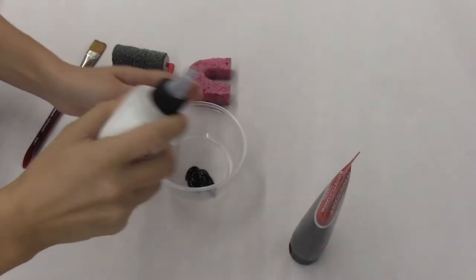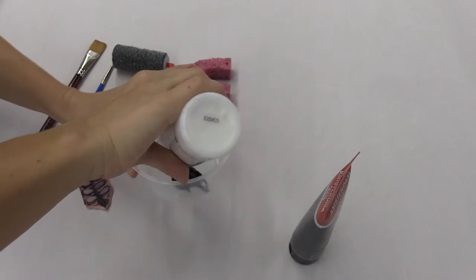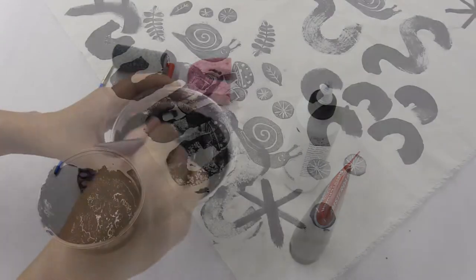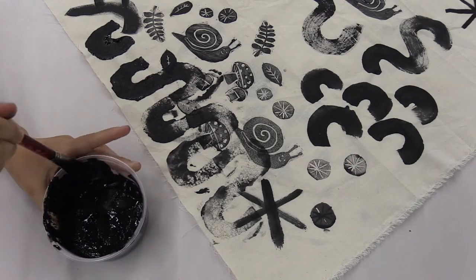Again, you can use any color of acrylic paint. Stir it together using a brush until it's well combined. It's a good idea to do a test first using a scrap piece of fabric.